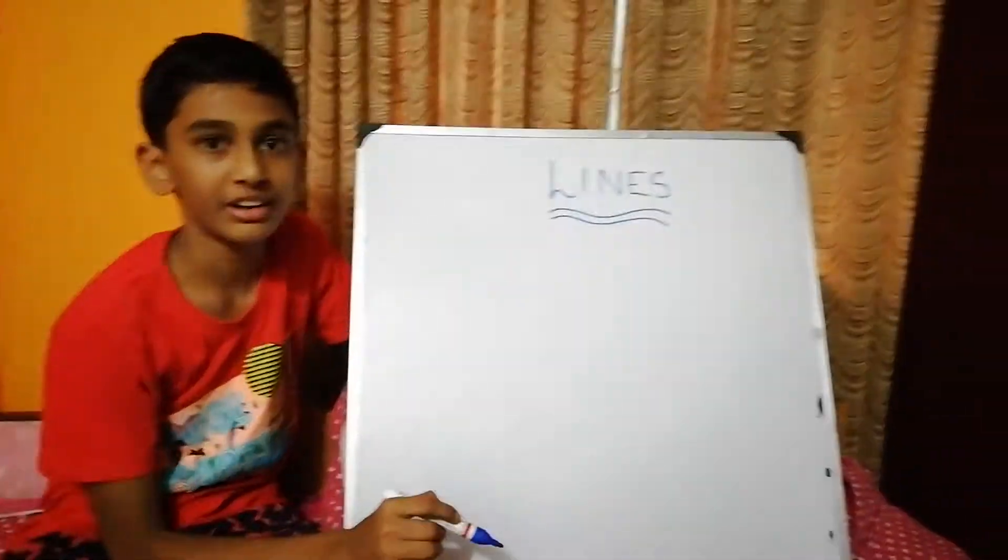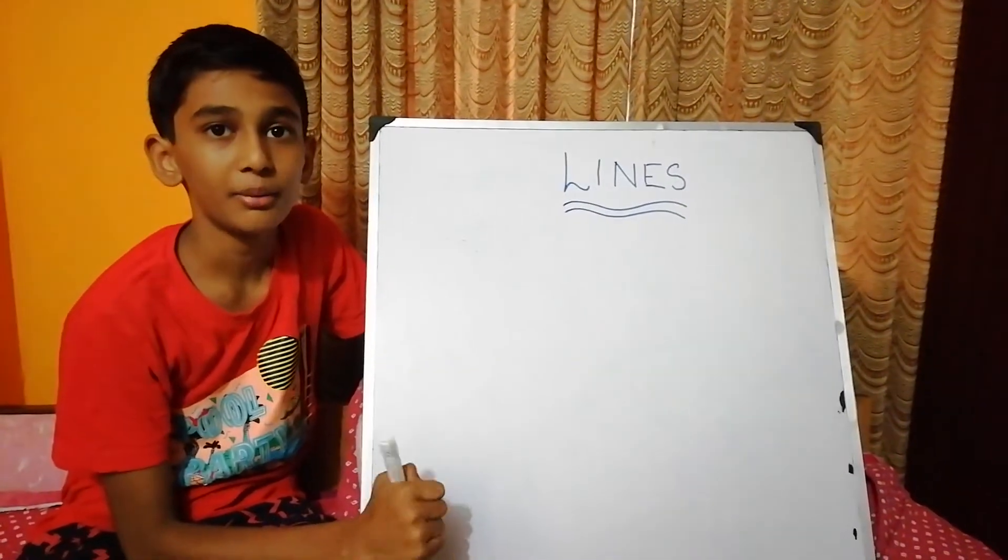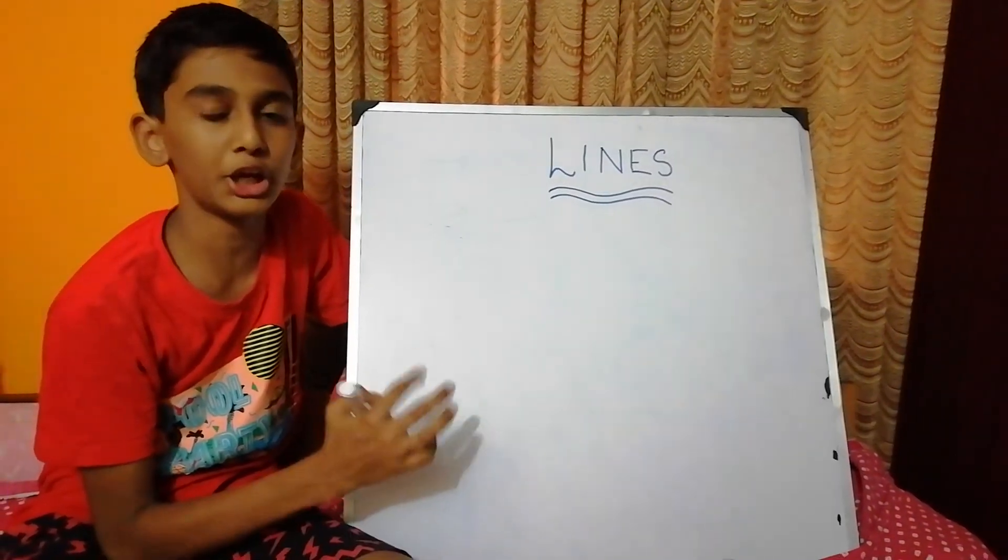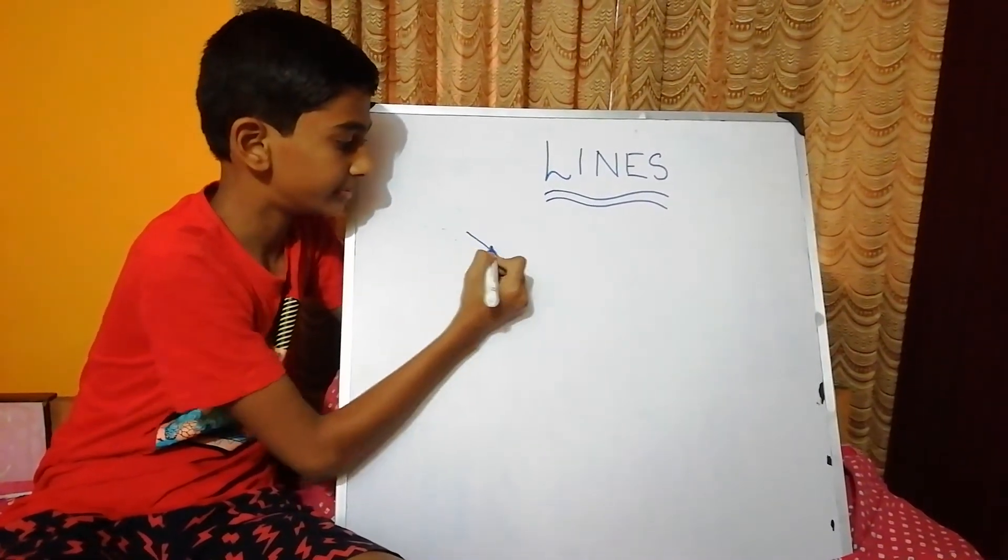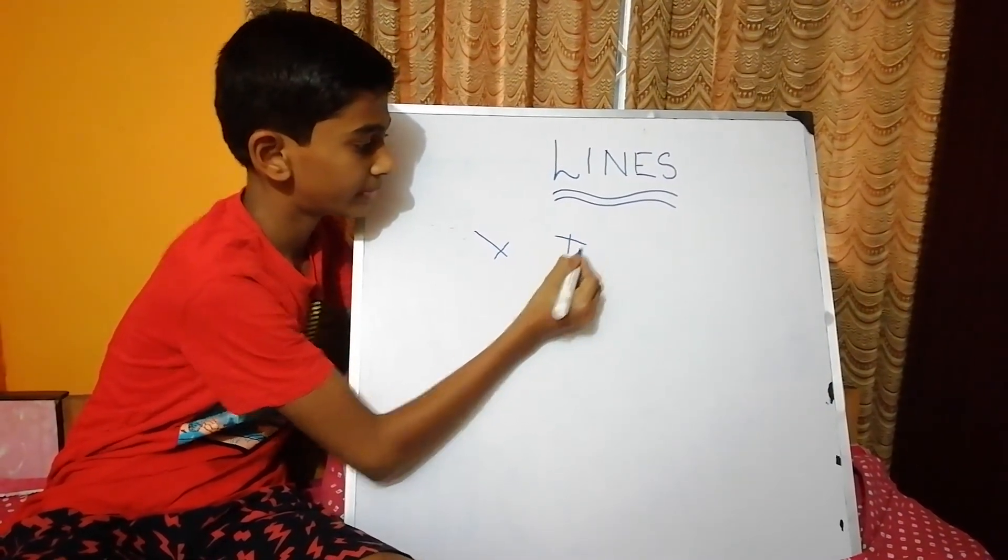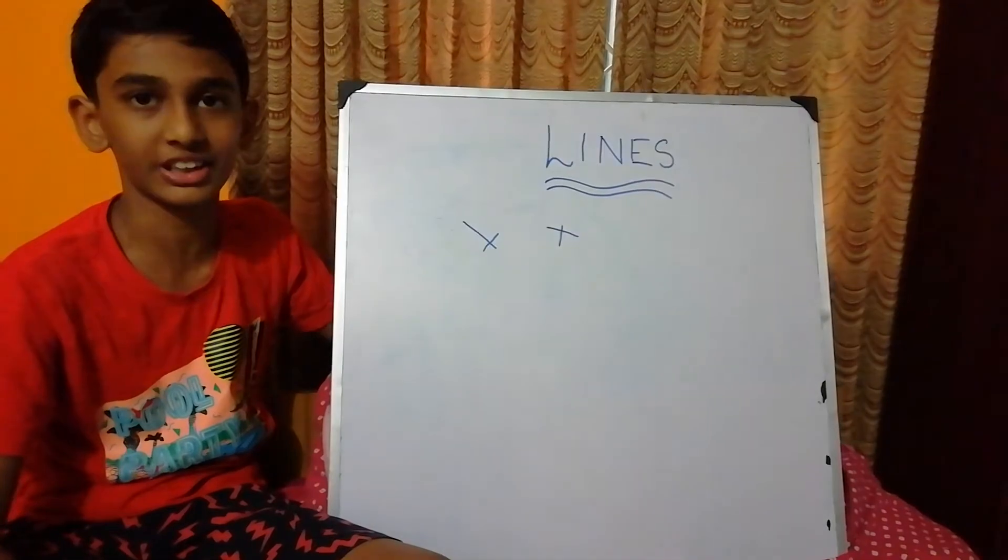It is intersecting line. The intersecting lines meet themselves or intersect themselves at any point. For example, these are all intersecting lines.